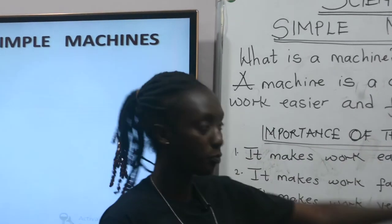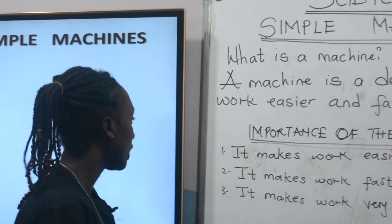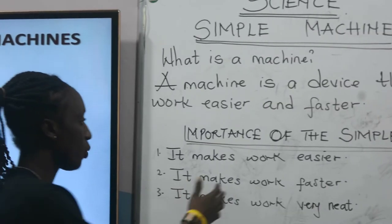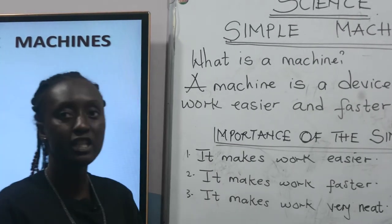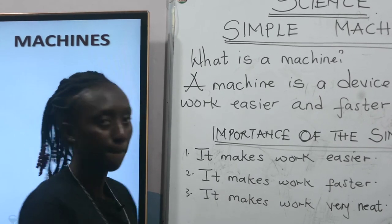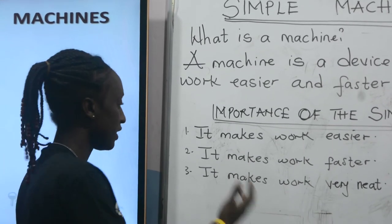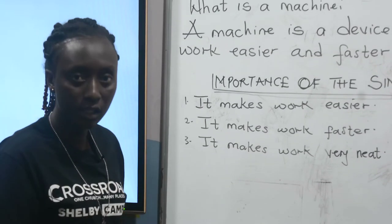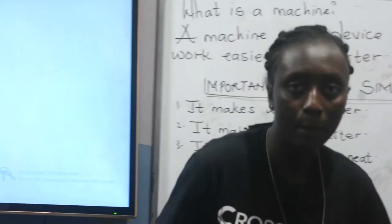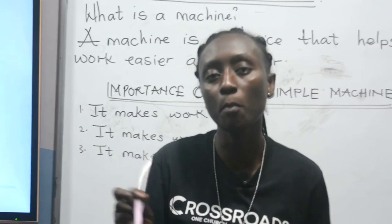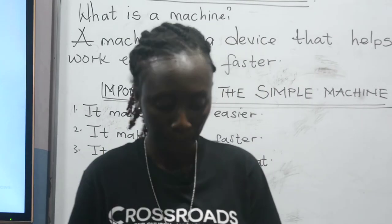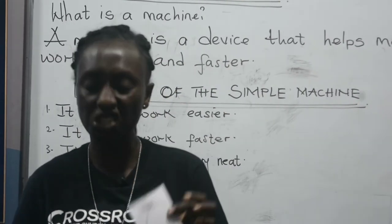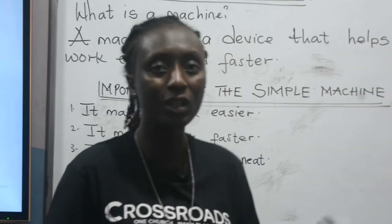We are now on the importance of the simple machine. One, it makes work easier — a simple machine makes work easier. Two, it makes work faster. Three, it makes work very neat. For example, I'm holding in my hand a simple machine — that is a scissor — and I have an image, so I'm going to cut out this image. This one is an apple.